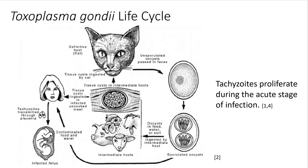Looking at the life cycle of Toxoplasma gondii, the definitive host is the domesticated feline. They shed oocysts in their feces, which can contaminate water sources and vegetable matter. When animals ingest contaminated sources, they develop tissue cysts in their muscles full of the parasite, and when we ingest undercooked meat, the parasite can spread to us. Tachyzoites are the life stage that proliferates during the acute stage of infection.